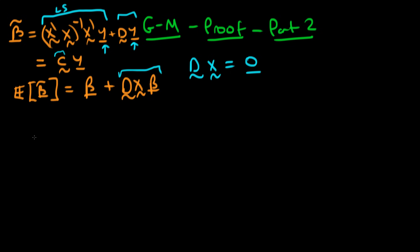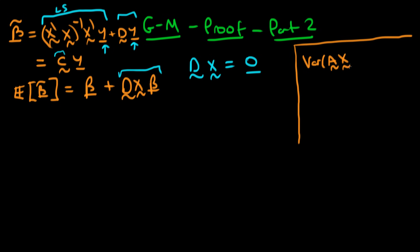Now we have to find an expression for the variance of beta tilde, and in doing so we're going to make use of a few general matrix results. One of them is that the variance of any matrix A times a stochastic matrix x equals A times the variance of x times A', where A' is the transpose of A.